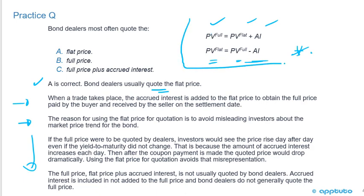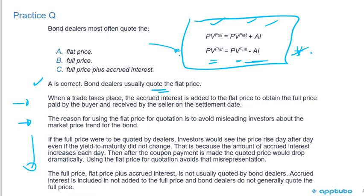The important formula to remember: the present value of the full price equals the flat plus the accrued interest. The flat price is the one we quote; it follows the pull-to-par price trajectory. The present value of the flat price equals the present value of the full price minus the accrued interest.